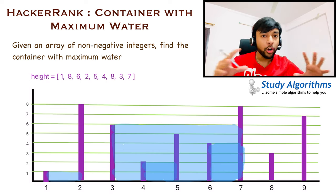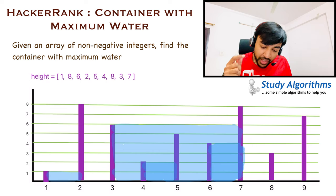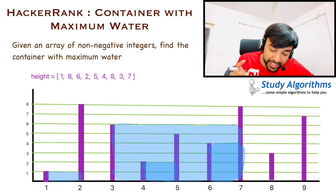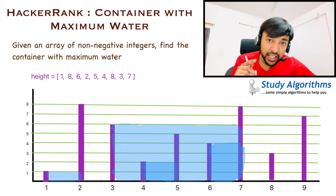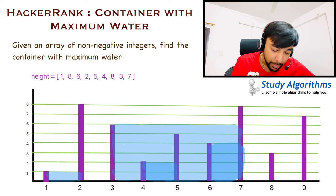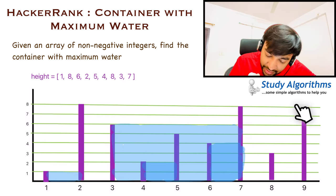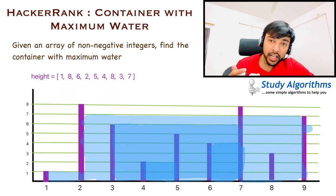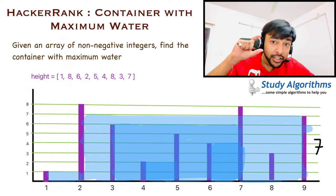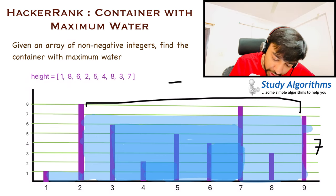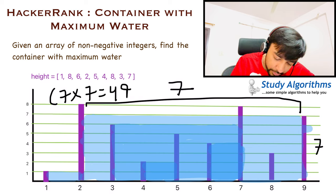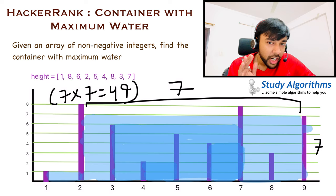You can see that there are a lot of containers possible — so many possibilities. In this problem, you need to find the area of the largest container. In this specific test case, the container with the maximum area would be formed by sticks 2 and 9. The height of this container is 7, defined by the smaller stick, and the width is also 7. So the answer to this test case is 7 times 7, which equals 49. If you have understood the problem, feel free to try it on your own. Otherwise, let us dive into the solution.